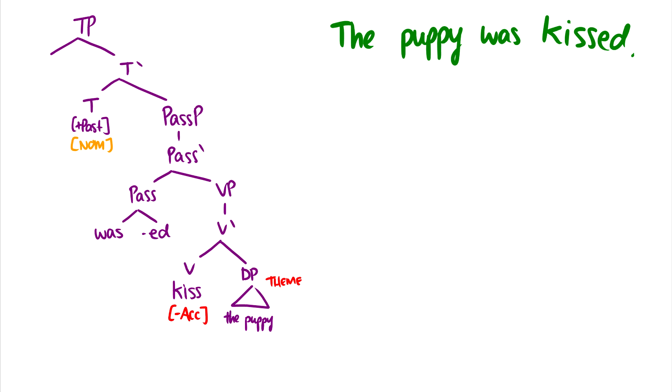So what does it do? Well, it moves up to spec TP to get nominative case. So now we have the puppy up in spec TP. And this is now a trace. So the puppy is still the theme, but now it gets nominative case from T.